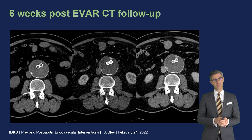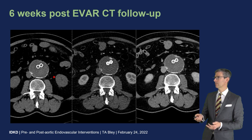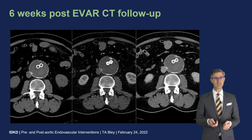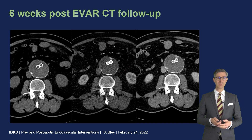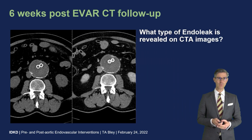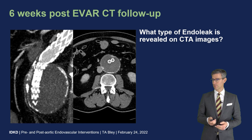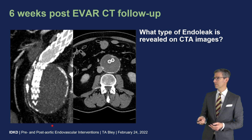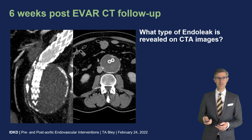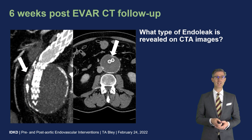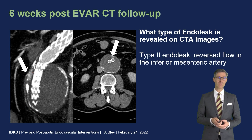In our case, at six weeks post-EVAR, you see here a non-contrast, arterial phase, and later-phase contrast-enhanced CT scan, and you can probably readily see the endoleak. This is the sagittal reformat, and you can see the inferior mesenteric artery coming all the way to its origin. This is a type II endoleak due to reverse flow of the inferior mesenteric artery.